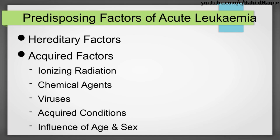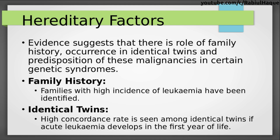We can broadly divide the predisposing factors of acute leukemia under two headings: hereditary factors and acquired factors. Among acquired factors there are ionizing radiation, chemical agents, viruses, acquired conditions, and influence of age and sex.